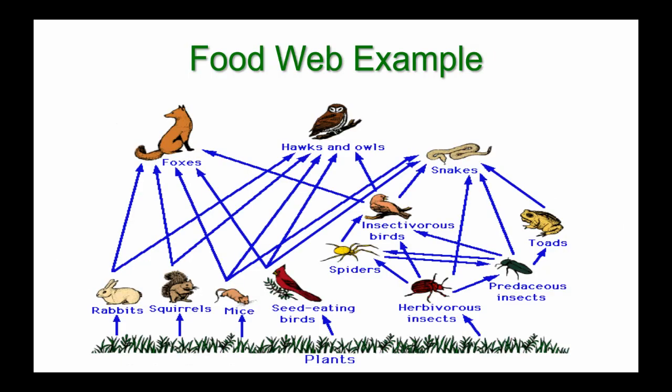A food web is a little more complicated and tries to show a more realistic view, because organisms usually don't just eat one type of other organism. For example, foxes, hawks, owls, and snakes eat many different types of organisms. However, this is still a very simplified version — we don't have decomposers in this image. It's called a model, and we can use it to predict what would happen if there was some type of disruption to the system.